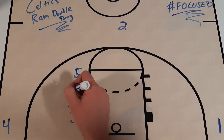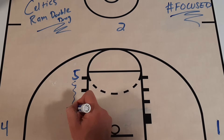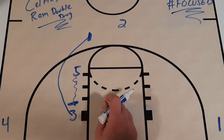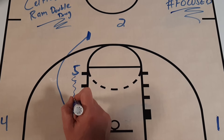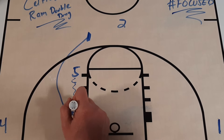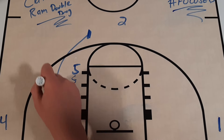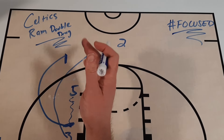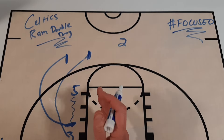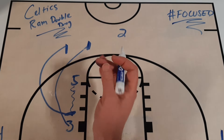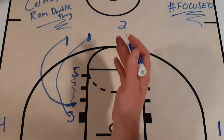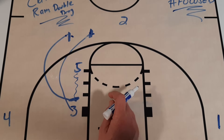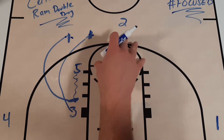This player is going to come down and set a screen for the ball screener — that's called a ram screen, where you set a screen for the screener who's going to come up and set a ball screen. Then the second player comes up and sets a screen as well. This is the double drag ball screen, used a lot in transition. Some teams call it a 77 screen — it's two players setting ball screens consecutively.